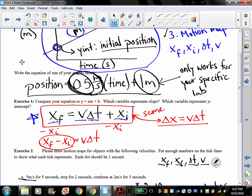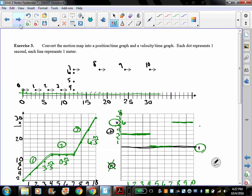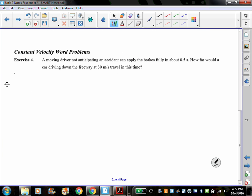For algebra, we're going to be using the equation that we derived in the first vodcast: delta x equals v delta t. So if we look at the constant velocity word problems, the first one we start with is a moving driver not anticipating an accident can apply the brakes fully in about 0.5 seconds. How far would a car driving down the freeway at 30 meters per second travel in this time?